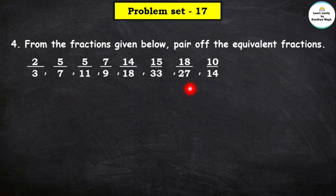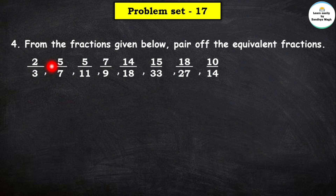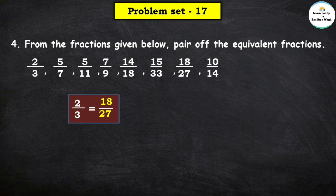Next we check a fraction with denominator 27. In the 3 times table, 3 × 9 = 27. So we multiply numerator 2 by 9 as well: 2 × 9 = 18. The numerator here is 18, so 18 upon 27 is the equivalent fraction of 2 upon 3.